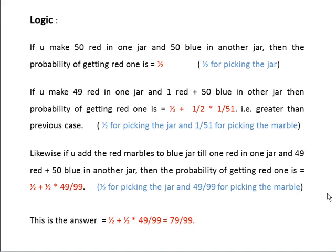1/51, because one red ball will be there in the blue jar. So the sum equals 1/2 plus 1/2 times 1/51. In this case, the probability of getting a red one is higher than the previous case.